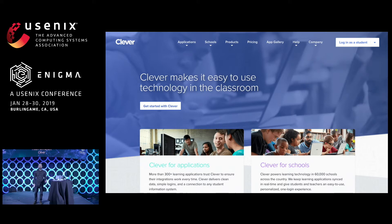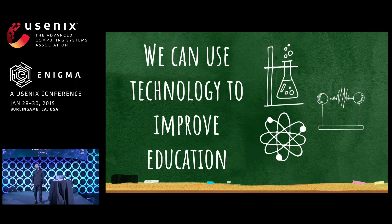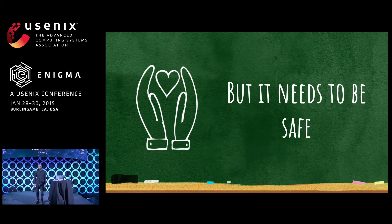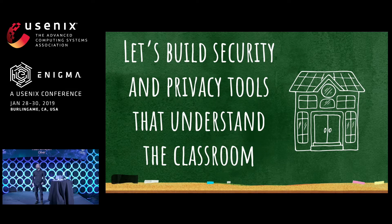I've been thinking about student data privacy and security for the past three years as a member of the engineering team at Clever. Clever is an identity platform and single sign-on portal used in over half of the K-12 classrooms in the United States. I came to Clever because I believe that technology can improve education, and a better educated society means better outcomes for everybody. As someone who cares about people's right to online safety, I know that if we give children access to technology in the classroom, it needs to be safe. We need to understand how children use technology in the classroom to build effective security and privacy mechanisms for them.